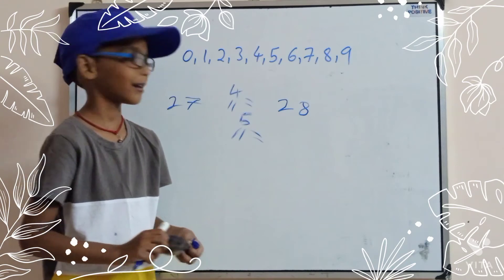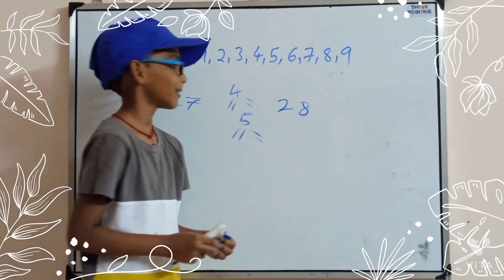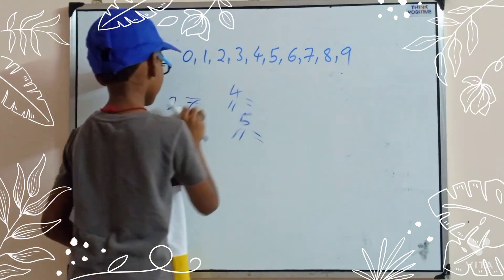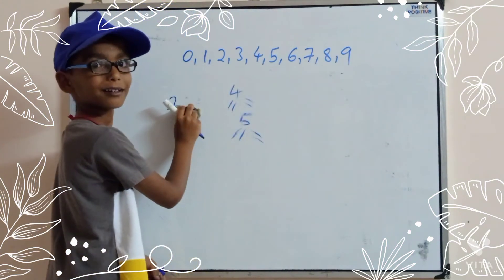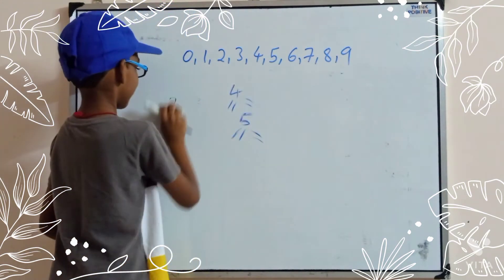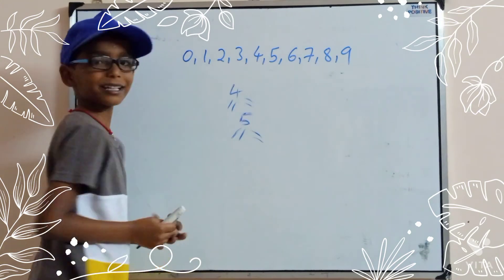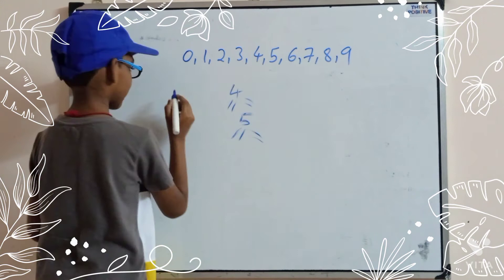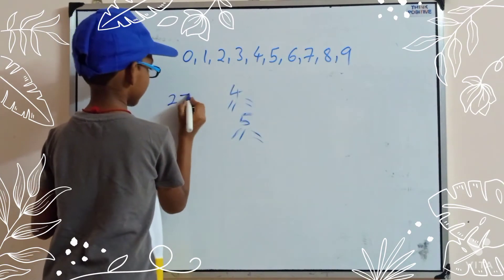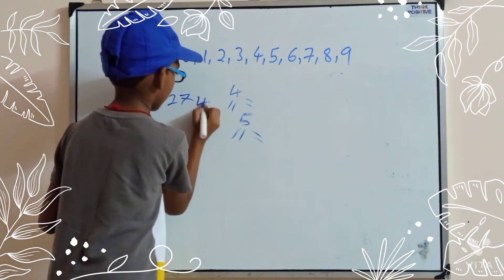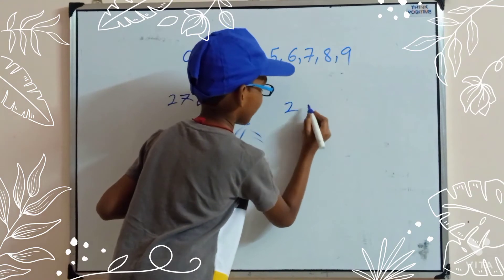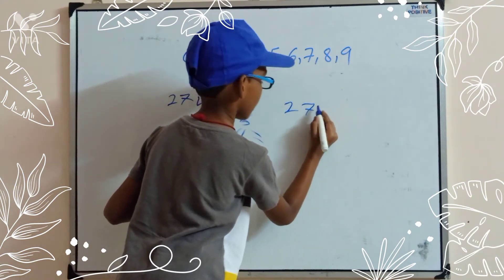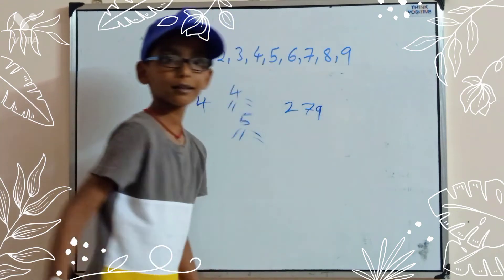Similarly, you take 3 digit numbers. I will take 3 digit number. Suppose I will take 274 and 279.